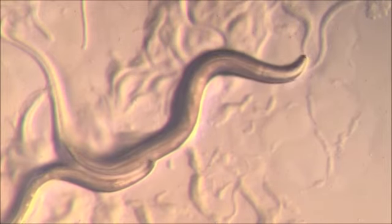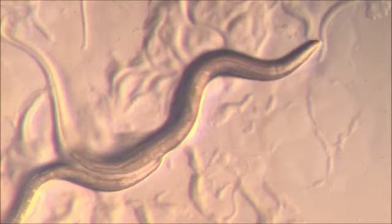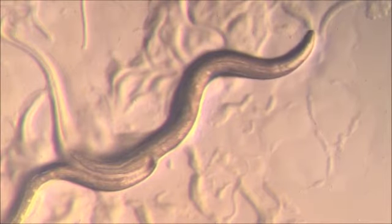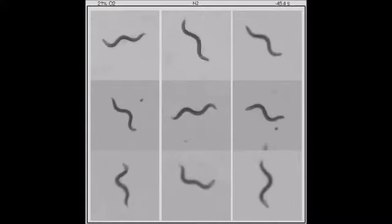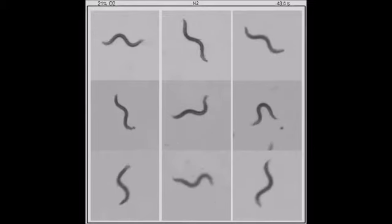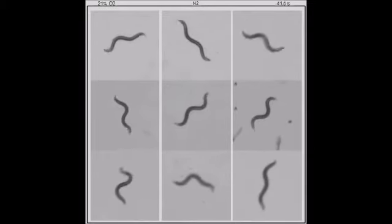Nematodes sense and locate food and other things in their environment through the use of chemotaxis and chemoattractive gradients. The researchers set out to uncover the neuronal network behind the use of chemotaxis and the locomotive signals that correspond with it.